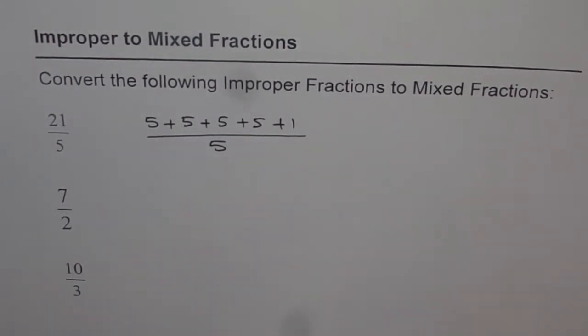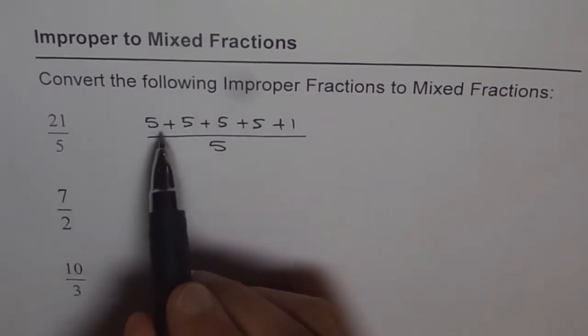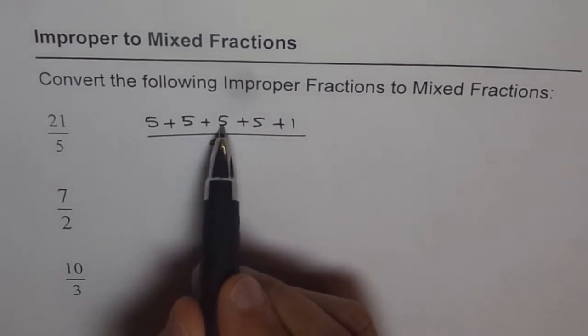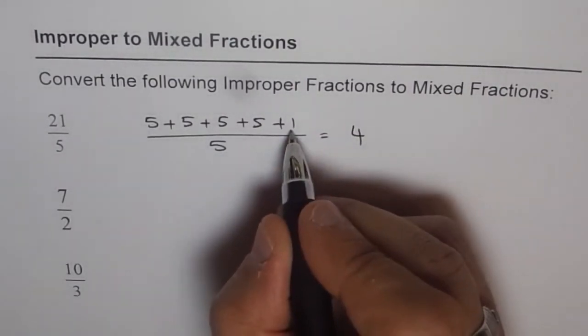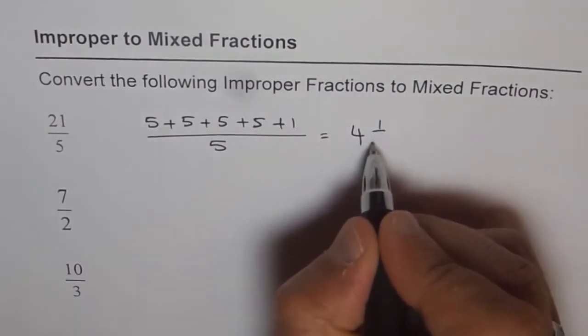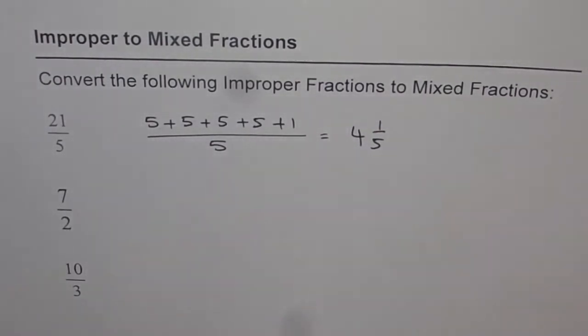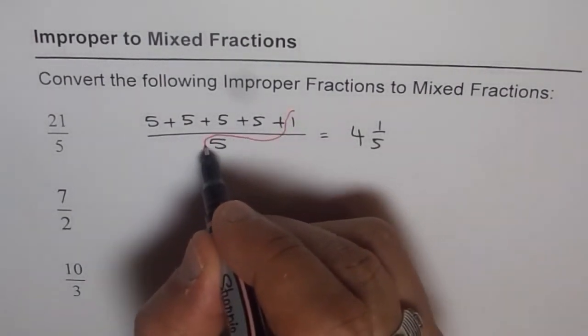We are left with 1. That's it. Over 5. If you can do repeated addition, this is not a bad technique, right? But you know, repeated addition is even tougher at times. Anyway, how many 5's do we have? 1, 2, 3, 4.